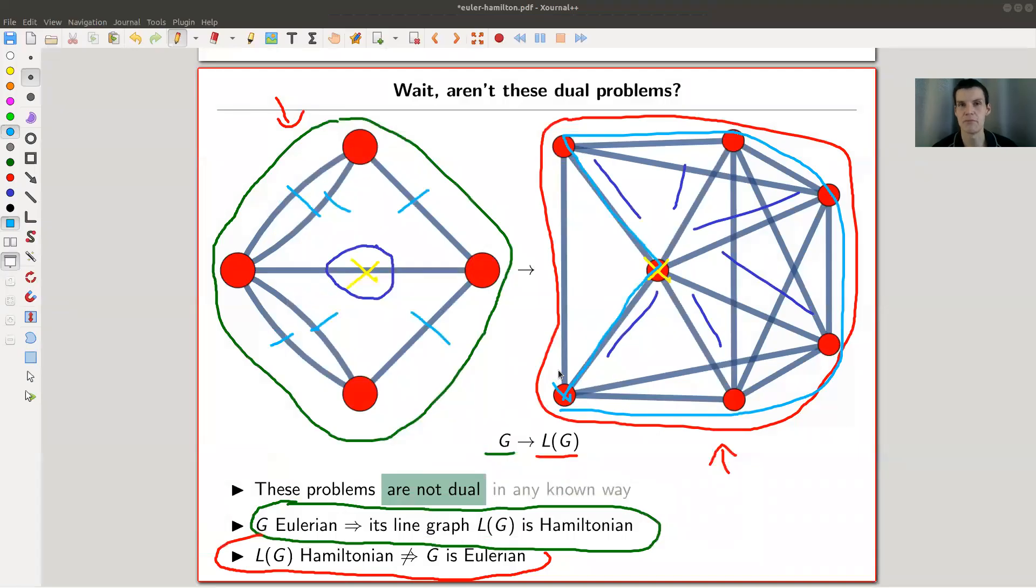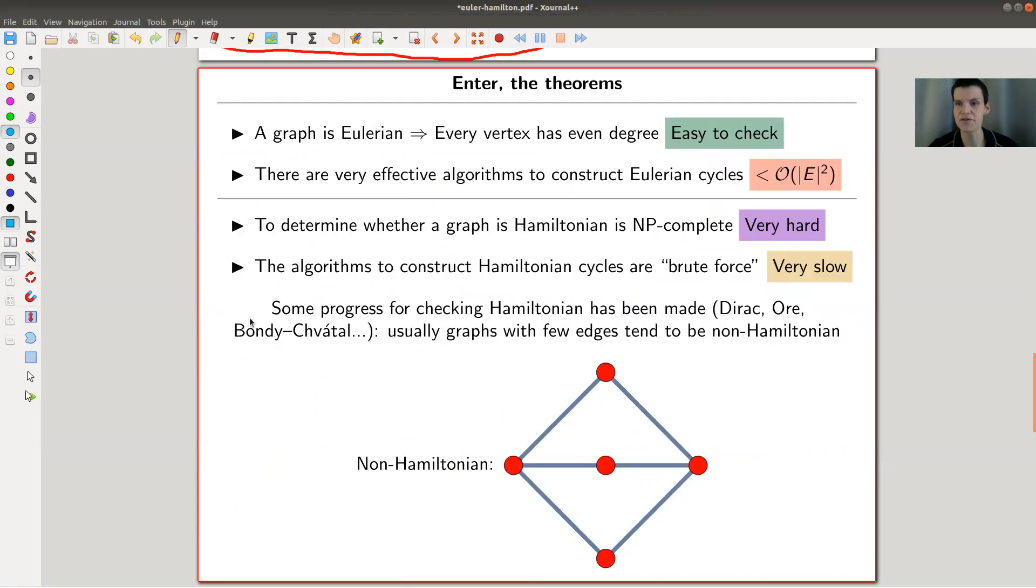You can have graphs that are Eulerian but not Hamiltonian. You can have graphs that are Hamiltonian and not Eulerian. You can have graphs that are both, and you can have graphs that are neither. There's no really nice duality connecting them, which I find very surprising. And then even worse, one of them is super easy and one of them is super hard, assuming P is not equal to NP.